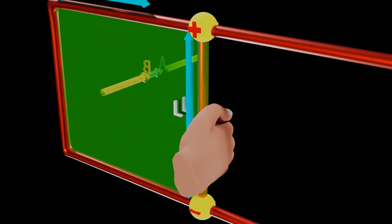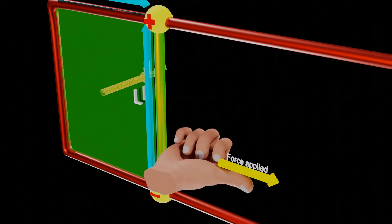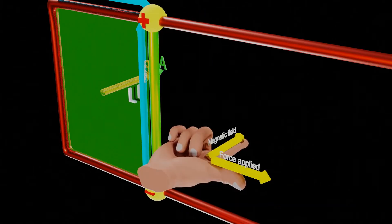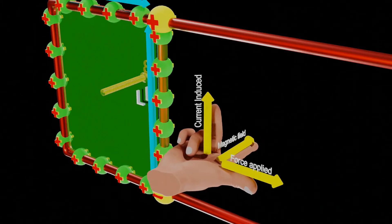In which thumb points in the direction of force applied on a slider. Forefinger placed along the direction of magnetic field and then middle finger will give us the direction of current induced.